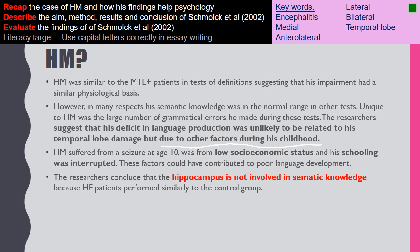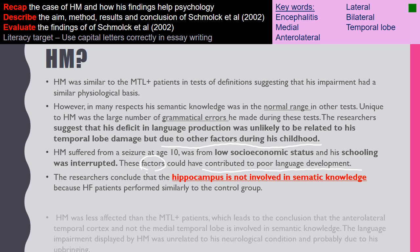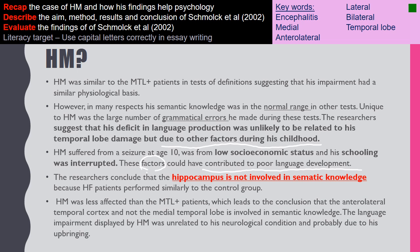HM suffered a seizure from epilepsy at age 10 and came from a low socioeconomic background, with schooling interrupted by his epilepsy. The researchers concluded it was these factors — not biological ones — that contributed to poor language development in HM. They then concluded that the hippocampus is not involved in semantic knowledge, since hippocampal patients performed similarly to the control group. HM was less effective than the medial temporal lobe patients, leading to the conclusion that it is the anterior lateral temporal cortex, not the medial temporal lobe, that is involved in semantic knowledge.